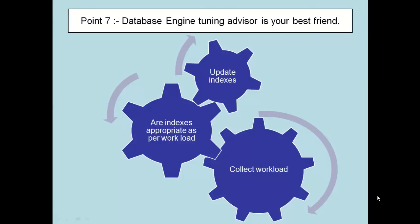How can we improve SQL Server performance by using the Database Engine Tuning Advisor? SQL Server performance largely depends upon how you have created the indexes, i.e. Cluster Index, Non-Cluster Index, etc. Most of the times developers do not even think about indexes. By default SQL Server creates a cluster index on the primary key, and that's the only index we will find in most databases by default.